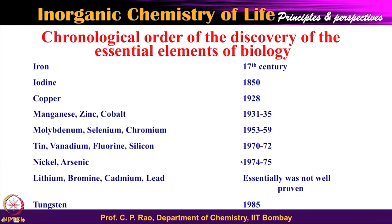In fact, tungsten is not found to be involved in normal human life, but it is found in life that grows at very high temperatures — in lava. Lava eruptions have temperatures of 300, 350, 400 degrees Celsius, where certain bacterial species grow, and in those systems tungsten takes the role that molybdenum plays in normal organisms. So we can see that over the past 200–250 years we have been learning about the involvement of ions or elements in biological processes including the human body.